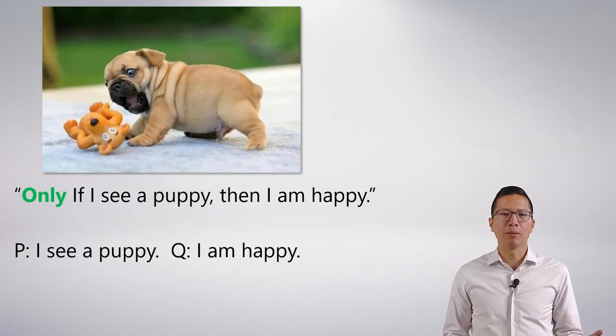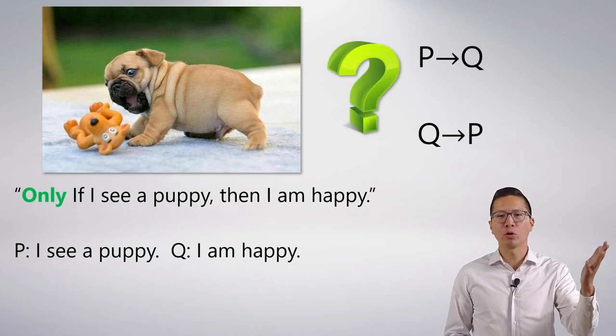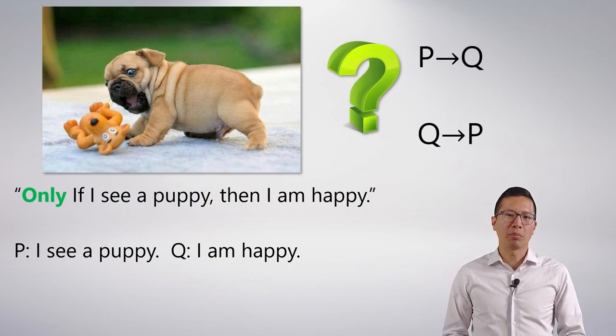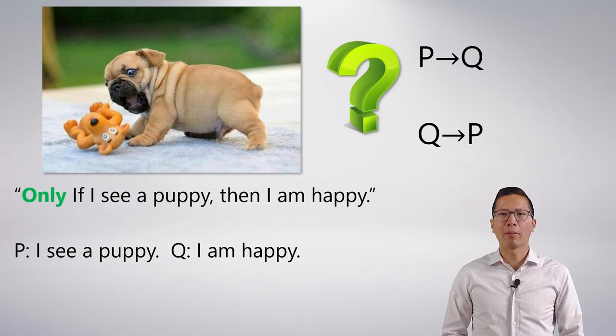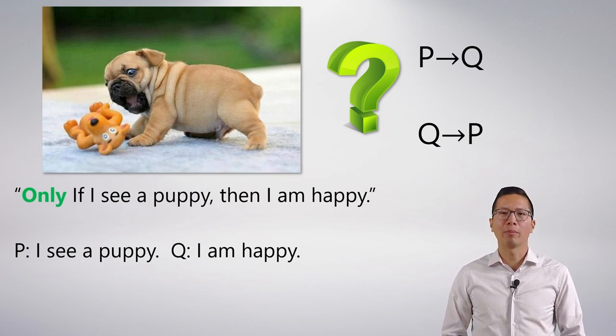So what does the statement mean? Only if I see a puppy, then I'm happy. Well, we have a couple options here. It can either be P arrow Q or Q arrow P, according to the abbreviation scheme provided. So P is I see a puppy, Q is I'm happy. Now which one do you think it is? Take a second and just pick. Is it P arrow Q, is it Q arrow P? Only if I see a puppy, then I'm happy.